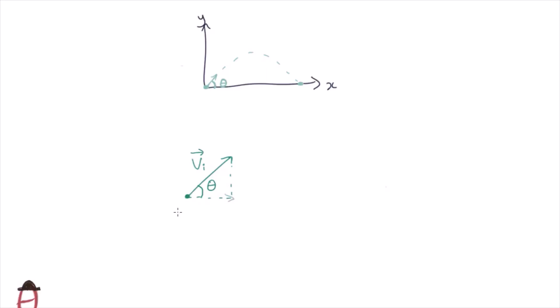If our angle theta is to the horizontal, then our initial vertical velocity will be the initial velocity multiplied by sin theta, and our initial horizontal velocity will be the initial velocity times cos theta.